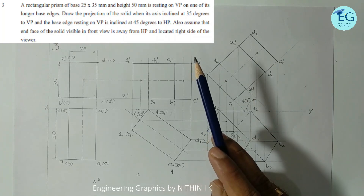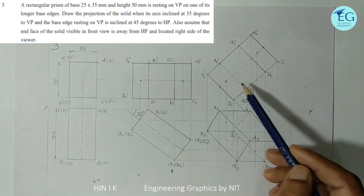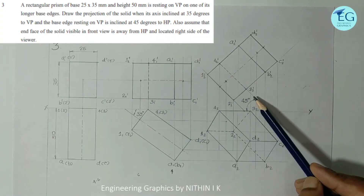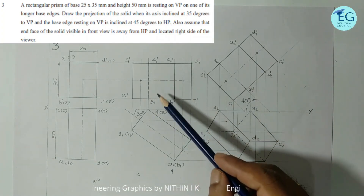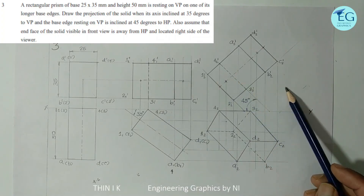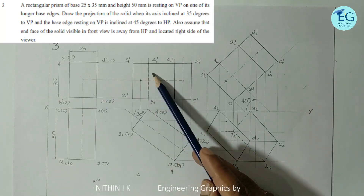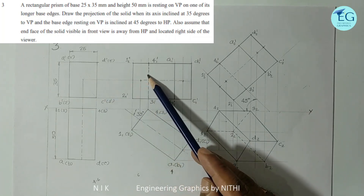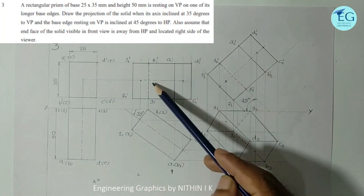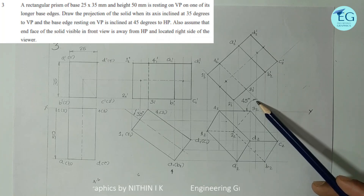The base edge resting on VP is at 45 degrees to HP. We go to the front view of HP, where the base edge is 4-3-1. We need to change the apparent angle. The length is 4-3, which is 35 degrees to the true length. We change the true angle to get the apparent angle.